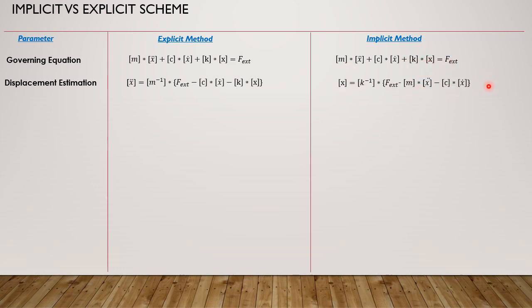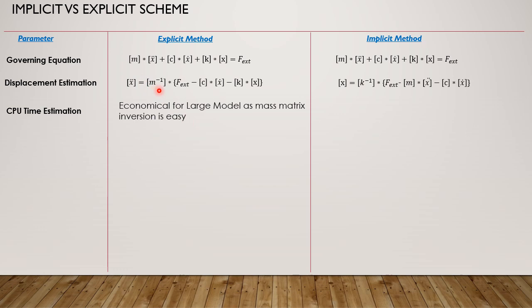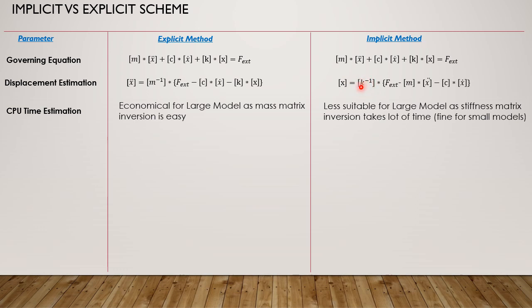For CPU time estimation, the explicit method is very economical for large models because the mass matrix inversion is quite easy. The mass matrix in explicit is lumped — meaning it has only diagonal elements and all non-diagonal elements are zero — so it becomes really easy for the computer to do the inversion. For the implicit scheme, we are doing the inversion of the stiffness matrix, which becomes really cumbersome and difficult for the computer as it takes a lot of time.